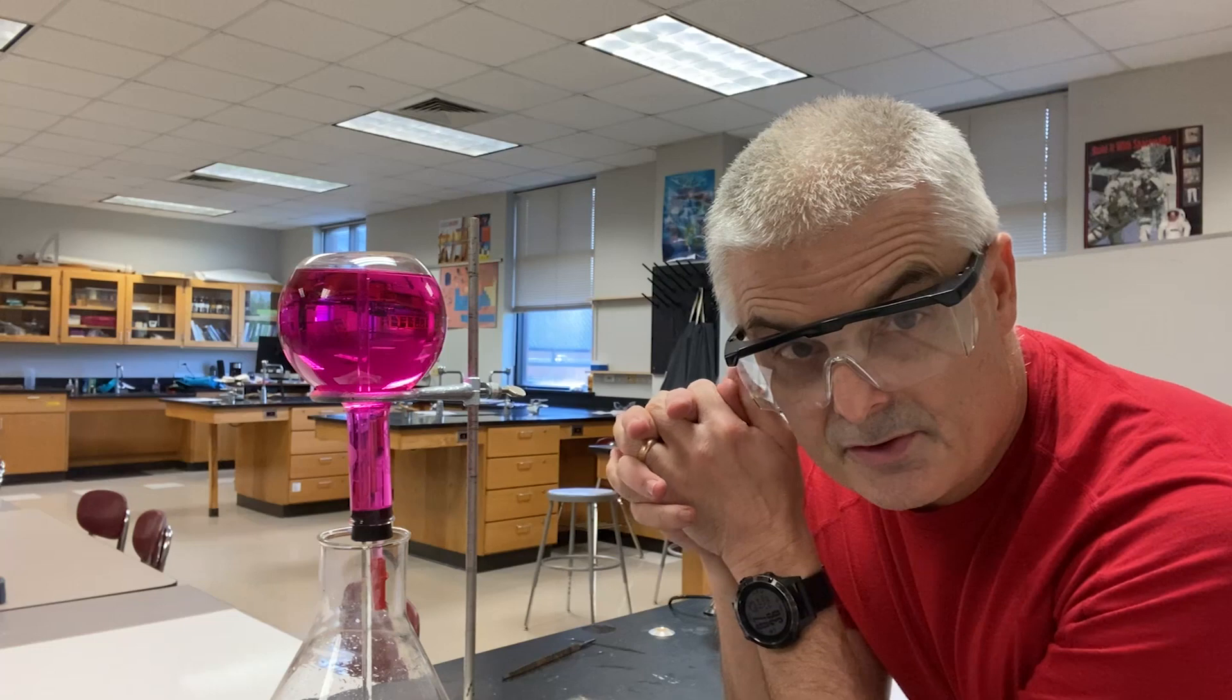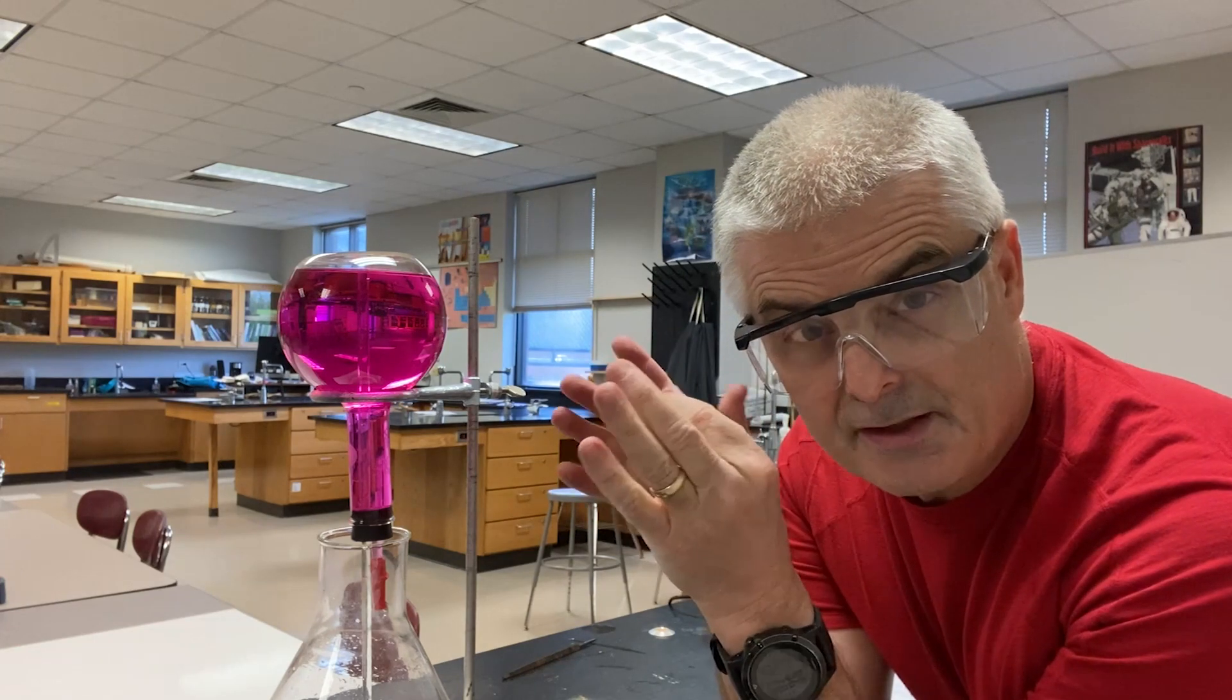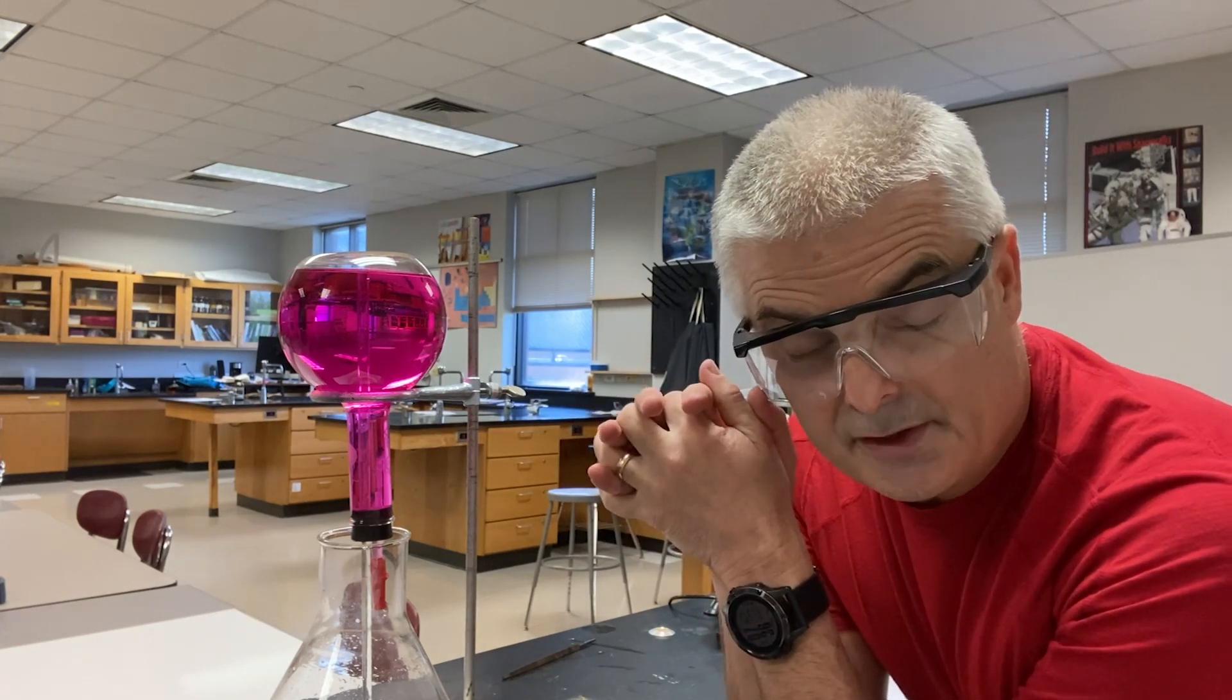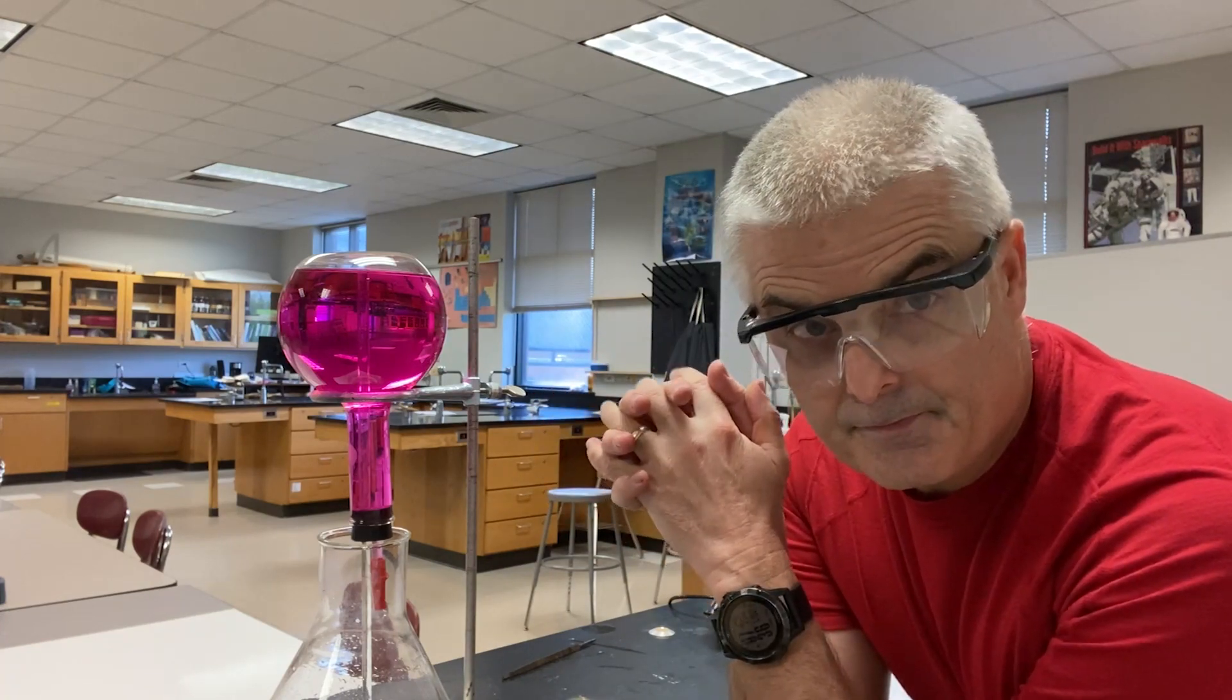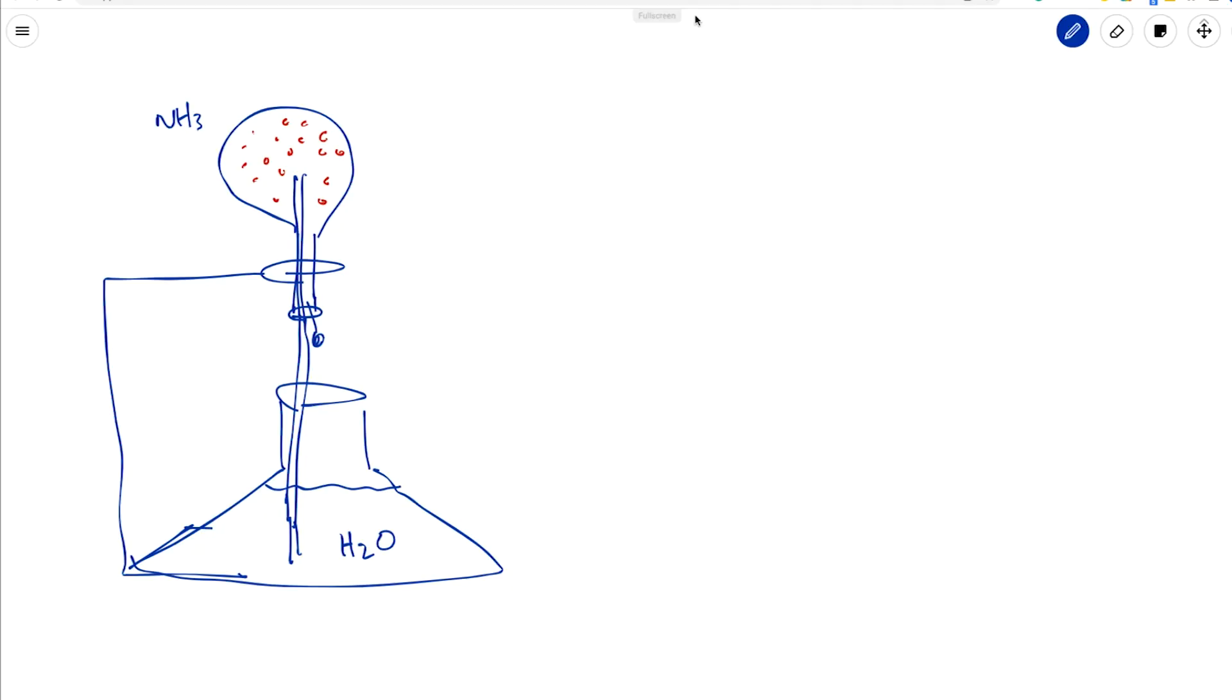Let's look at it molecularly to totally understand why this happened. So here's the apparatus that we had, and the little red dots here is the ammonia gas in the flask above, and then we've got water down here.